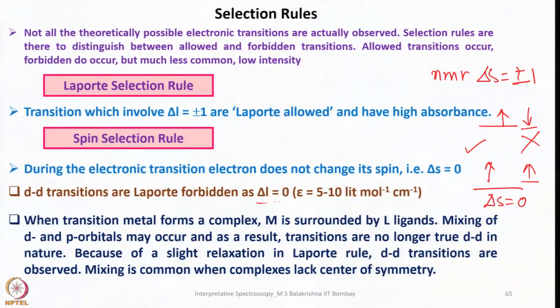D-d transitions are strictly speaking Laporte-forbidden, meaning ΔL = 0 since all d-orbitals have the same ΔL value. Since they are Laporte-forbidden, the molar absorptivity (ε) is in the range of 5–10 L mol⁻¹ cm⁻¹. However, when a transition metal forms a complex, M is surrounded by ligands and mixing of d and p orbitals may occur. As a result, the transition is no longer purely d-d in nature.